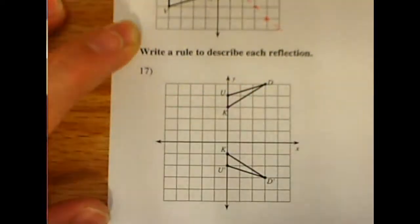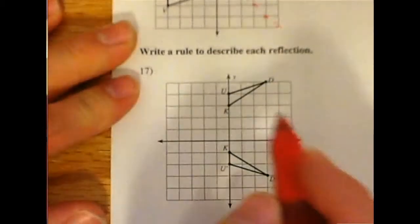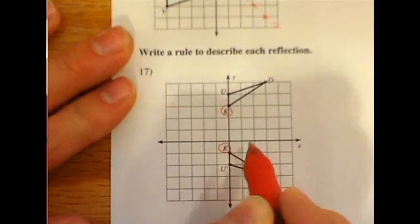To figure out exactly where that line is, you basically are looking for the midpoint, the middle of the point, let's say k, and its image, k prime.